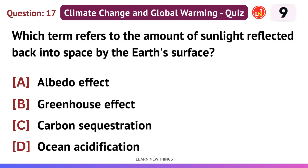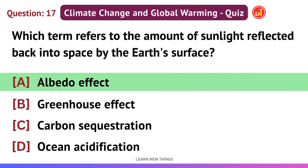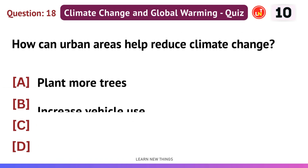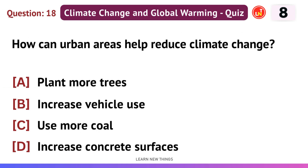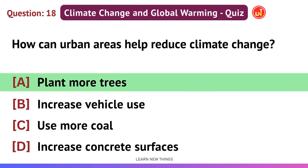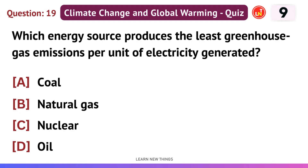Which term refers to the amount of sunlight reflected back into space by the Earth's surface? The albedo effect. How can urban areas help reduce climate change? Plant more trees. Which energy source produces the least greenhouse gas emissions per unit of electricity generated? Nuclear.